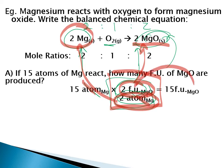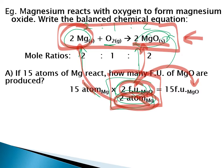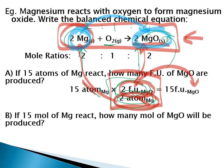Just like any other conversion factor, we set it up so that the units we want cancel out and the units we're looking for carry through. The only difference is this isn't an Avogadro's number ratio or a molar mass ratio — this is a mole ratio obtained from the balanced chemical equation. It works the same as other conversion factors but allows us to convert from one species in a reaction to another.